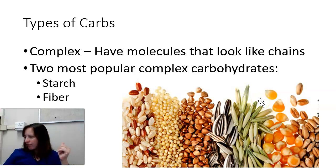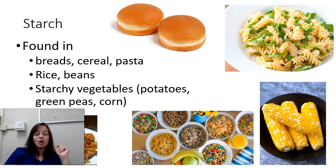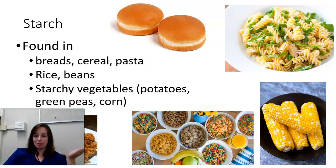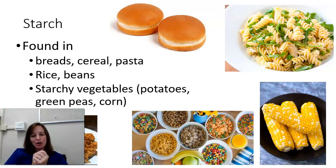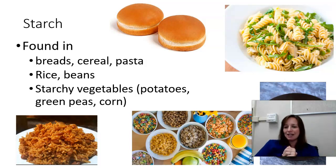Starch is made of all glucose and it's found in breads, cereals, pasta, rice, beans, and starchy vegetables like potatoes, green peas, and corn. Corn is a starchy vegetable - you don't get a lot of fiber from it, but you do get a lot of starch. Starch is very important for energy, but not necessarily for vitamins and minerals. When you're looking to get your daily allotment of vegetables, make sure you're not choosing all starchy vegetables, because they mainly just give you sugar.